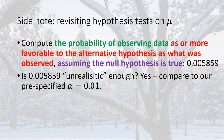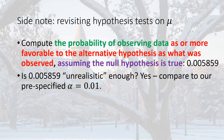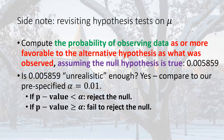Our conclusion is to reject the null. There is a one percent chance that assuming the null is true we made a type one error. What do you do with the p-value? You choose an alpha level before computing the p-value — that tells you how low the p-value needs to be for you to consider it unreasonable. Since we pre-specified alpha as one percent, the p-value of 0.005859 is so unrealistic we reject our null hypothesis.